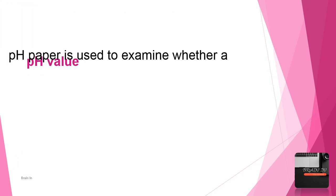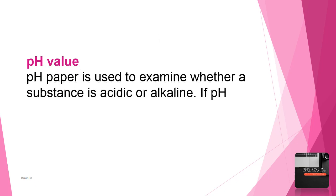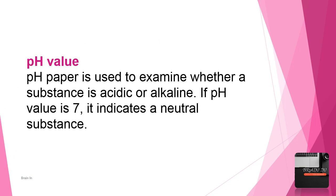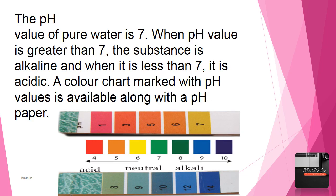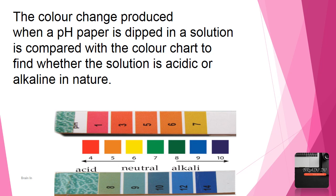pH value: pH paper is used to examine whether a substance is acidic or alkaline. If the pH value is 7, it indicates a neutral substance — the substance is neither acidic nor alkaline. The pH value of pure water is 7. When pH value is greater than 7, the substance is alkaline, and when it is less than 7, it is acidic. A color chart marked with pH values is available along with a pH paper, and the color change is compared with the chart.